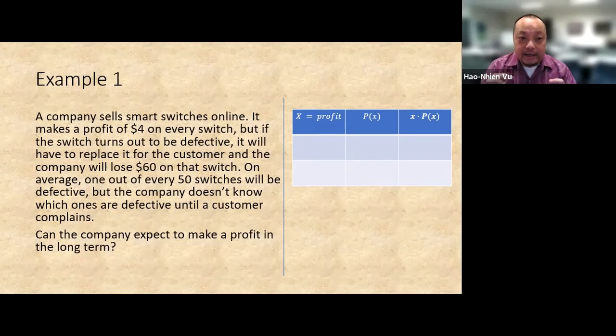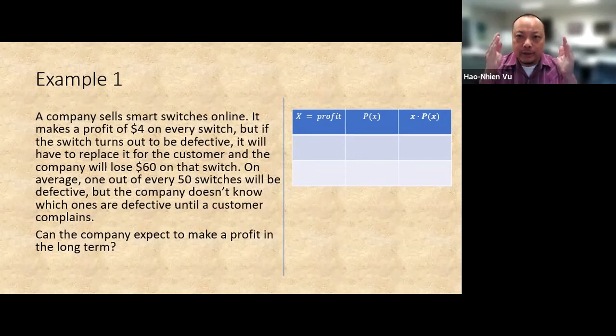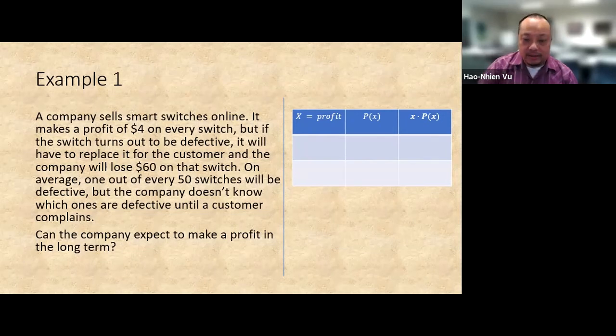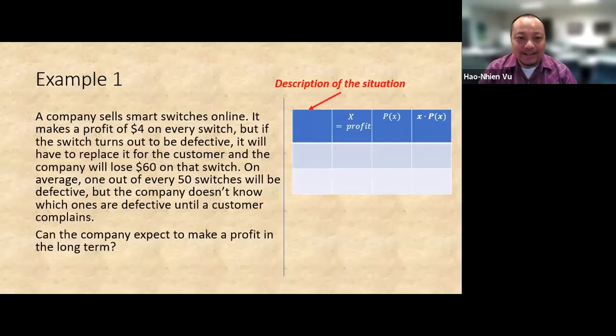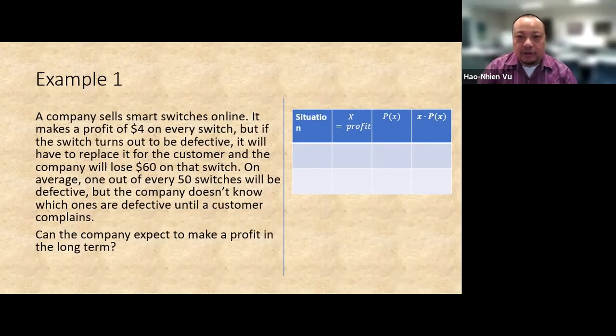But I'll tell you right now, don't just do that. You should put in an extra column for description of the situation so that you can keep track of all the different situations that come up, all the different x values that come up and their probabilities. So do a table like this instead. Have an extra column of workspace in front. We'll use it to describe the situation so that we can link the x and the p of x correctly. First column is the situation, second column is x which in this case is the profit, third column is p of x, and then the fourth column is x times p of x.